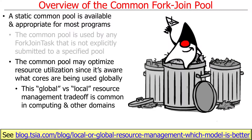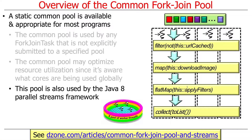There are lots of other places you'll see this tradeoff between local versus global resource management in Java. A good example is the Java heap, which is used for allocating memory dynamically and is managed by the garbage collector. In Java, you're discouraged from having individual idiosyncratic free stores for certain object types; instead, you're encouraged to use the global heap — same idea. This pool is also used by the parallel streams framework, so when we talk about parallel streams later in the course, you'll see that multiple parallel streams in a process all share the same common pool.